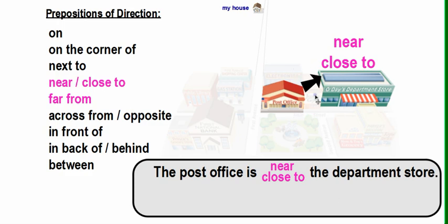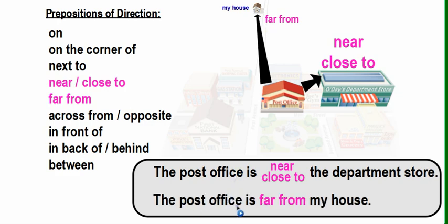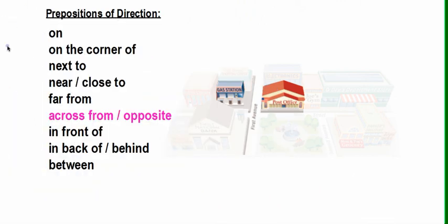'Near' and 'close to' indicate something is generally in the same area. But when we use 'far from,' we are talking about an object that is not close to another object. For example, the post office is far from my house. 'Far from' indicates something with a long distance.